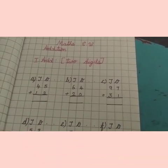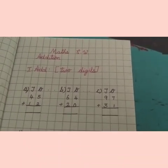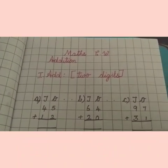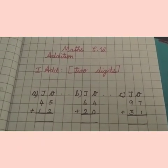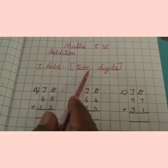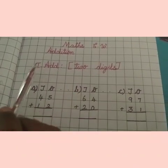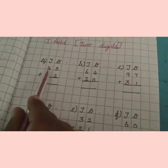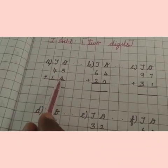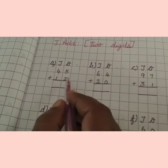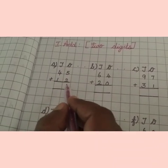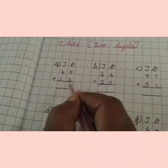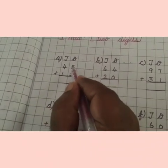Happy morning, children! Today we are going to learn addition of two-digit numbers. Let's learn. Add two digits — first one: 45 plus 12. We are going to add 45 plus 12. First, we are going to add the ones place. Five and two.